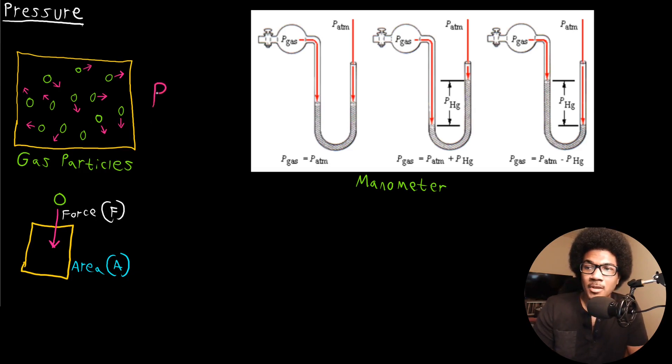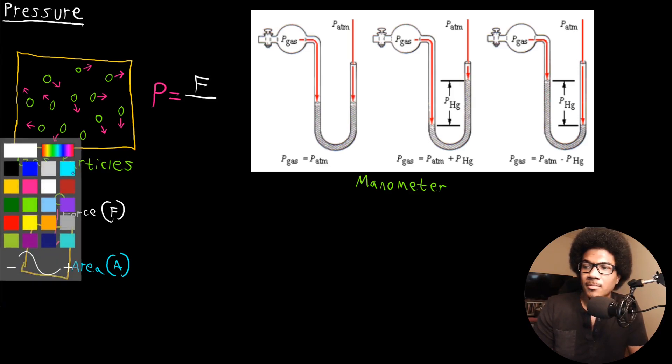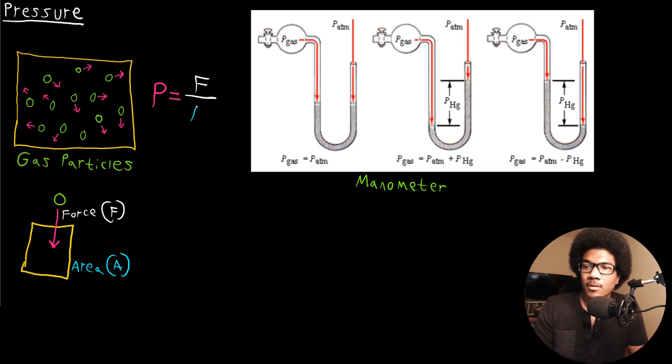And this is the general physics definition of pressure. So if I use a capital P here for pressure, pressure is going to be equal to the force exerted per unit area. So force per unit area is the general definition of pressure. And we're really talking about how these particles are striking the container with a particular force with a certain contact area for each of those gas particles. So that's going to be how pressure builds up in any container that contains a gas.